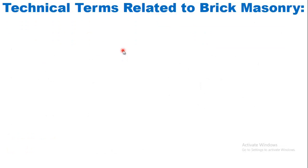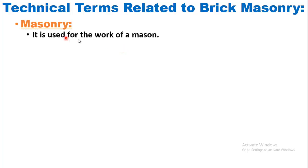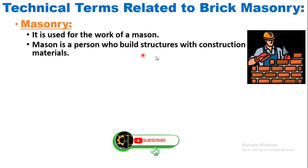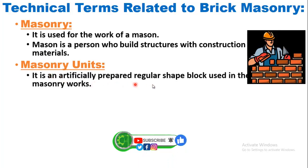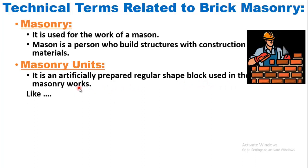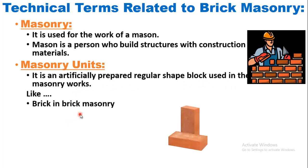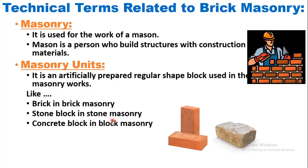Now coming towards the technical terms related to brick masonry. The first one is masonry — it is used for the work of a mason. A mason is a person who builds structures with construction materials. What are masonry units? A masonry unit is an artificially prepared regular-shape block used in masonry works. For example, brick in brick masonry, stone block in stone masonry, and concrete block in block masonry. Whatever unit you are using defines the type of masonry.